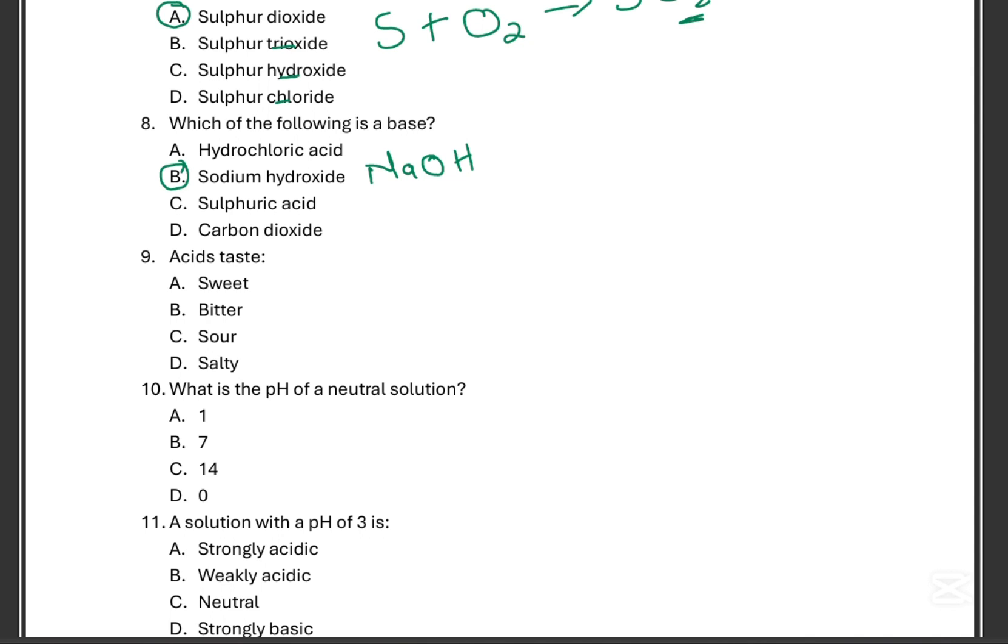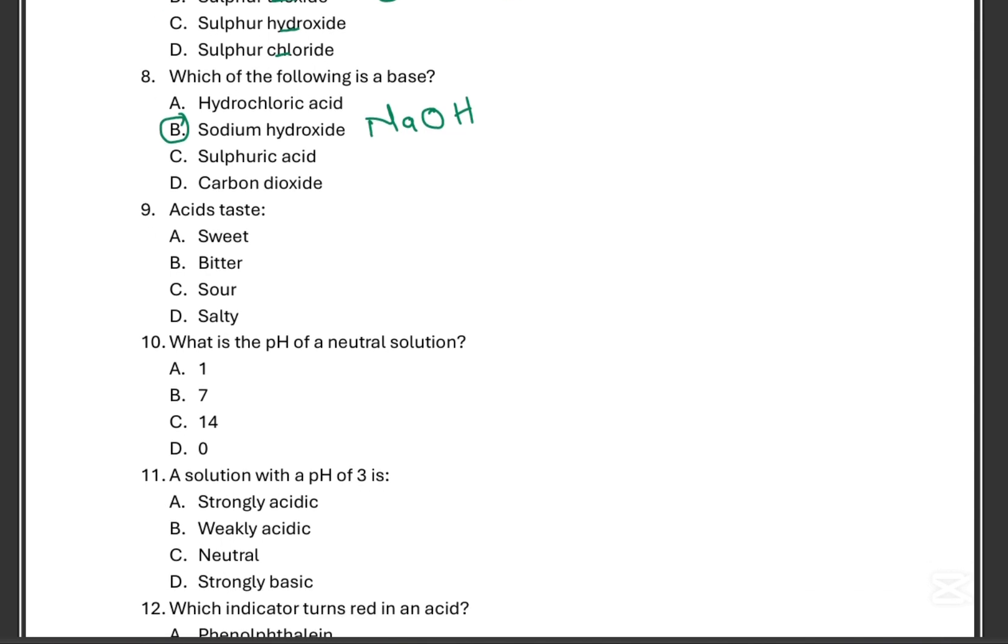Then question nine. We're almost halfway. Almost the acid's taste. They taste sweet, bitter, sour, or salty. We all know it's definitely sour. What is the pH of a neutral solution? pH of a neutral solution. Remember pH scale. Then you'll have your 1 and the middle of 7, then you'll have your 14. Then we talk about acidity and alkalinity. The neutral, this one is easy. Neutral number 10 is obviously B.